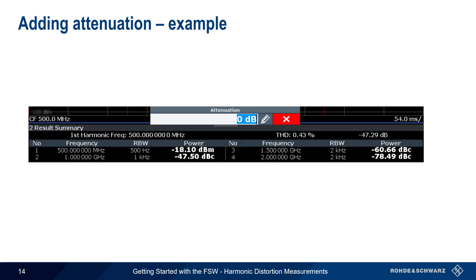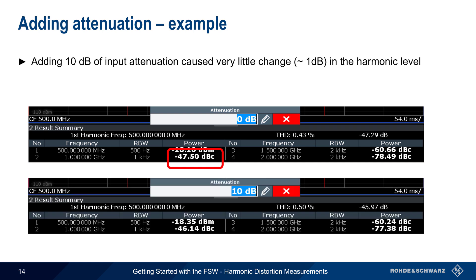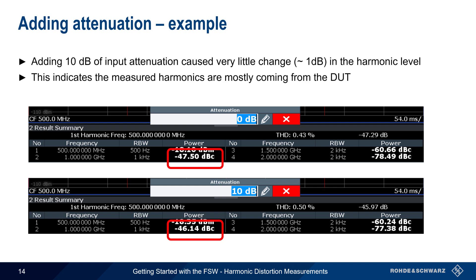Here are the levels of the harmonics without additional attenuation. Note in particular the level of the second harmonic: minus 47.5 dBc. When 10 dB of attenuation is added, the level of the second harmonic changes by less than 1 dB to minus 46.14 dBc. So in this case, we can say that the analyzer is adding little to no internally generated harmonic distortion to the measured signal.